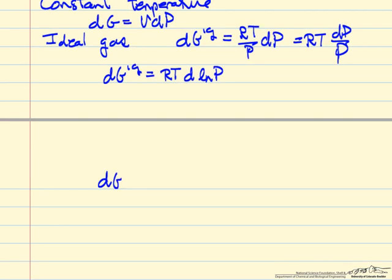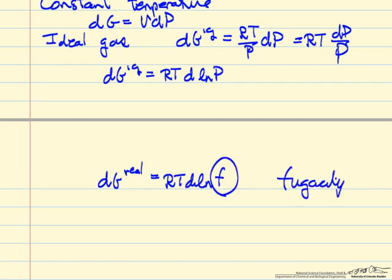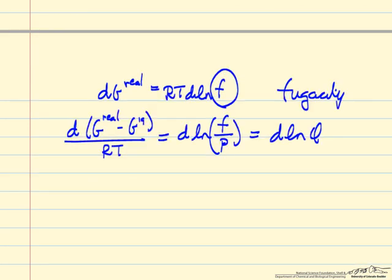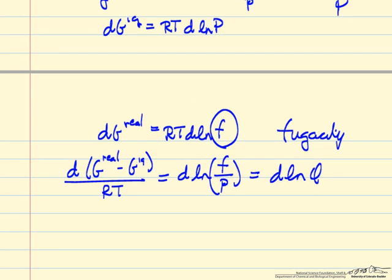D log of P. And so what's been done then for a real gas is to say, we like this form, so we're going to introduce a new variable called the fugacity. It's the value we put in here to make the Gibbs free energy change correct for a real gas.